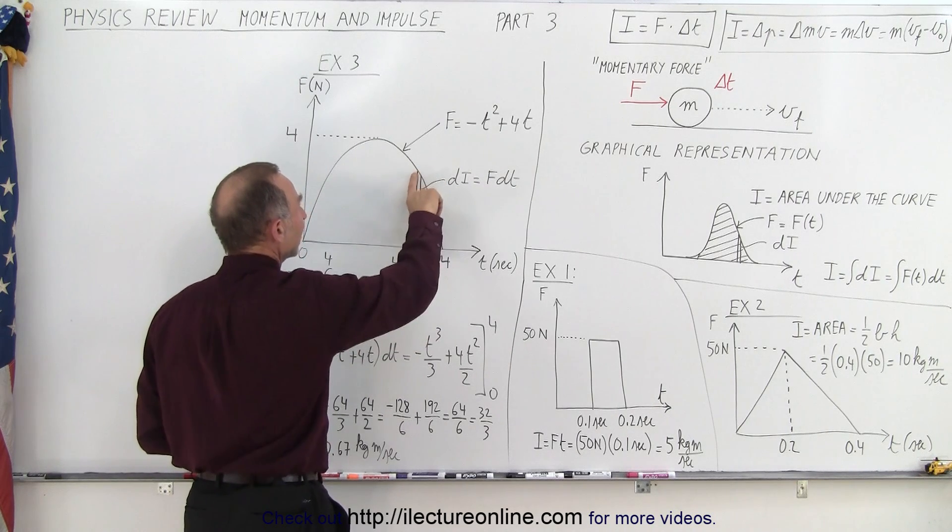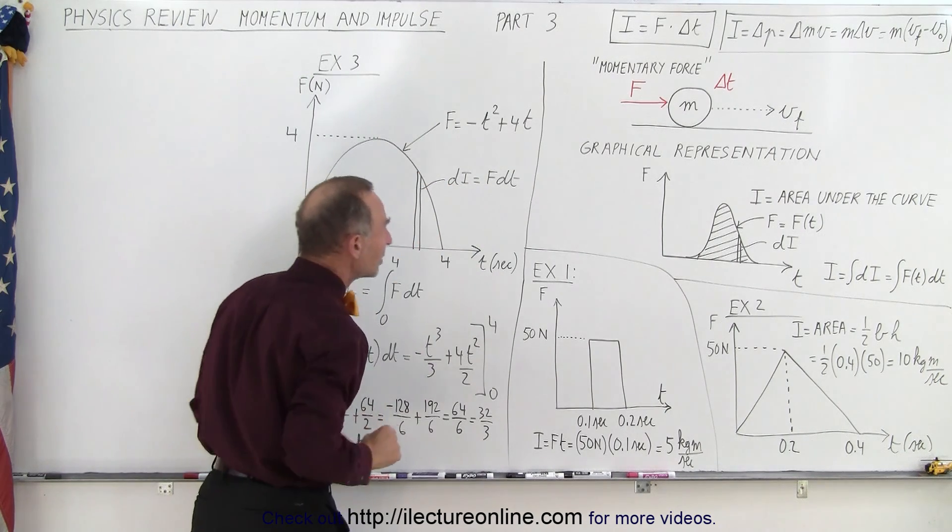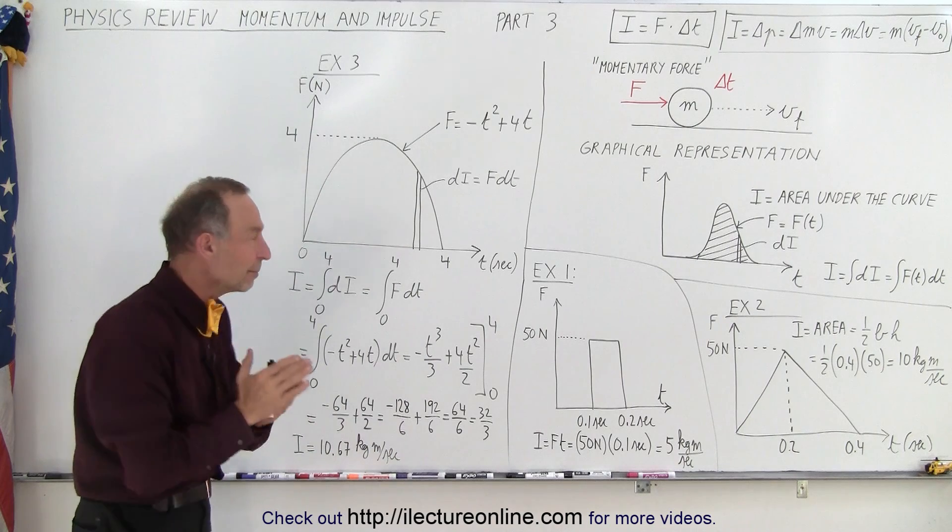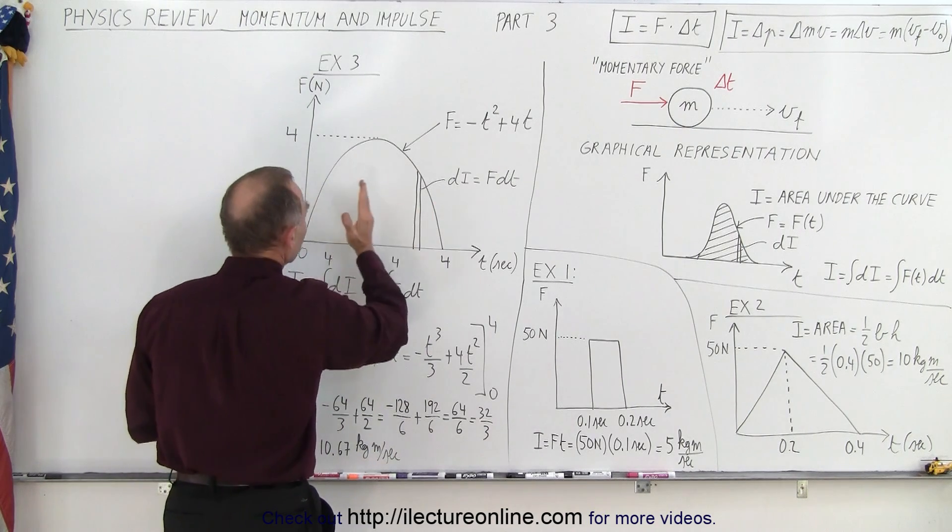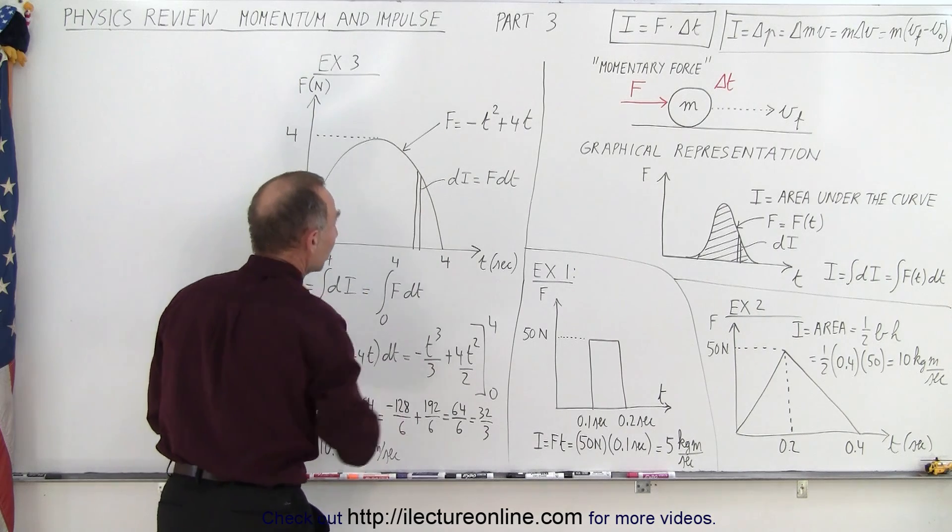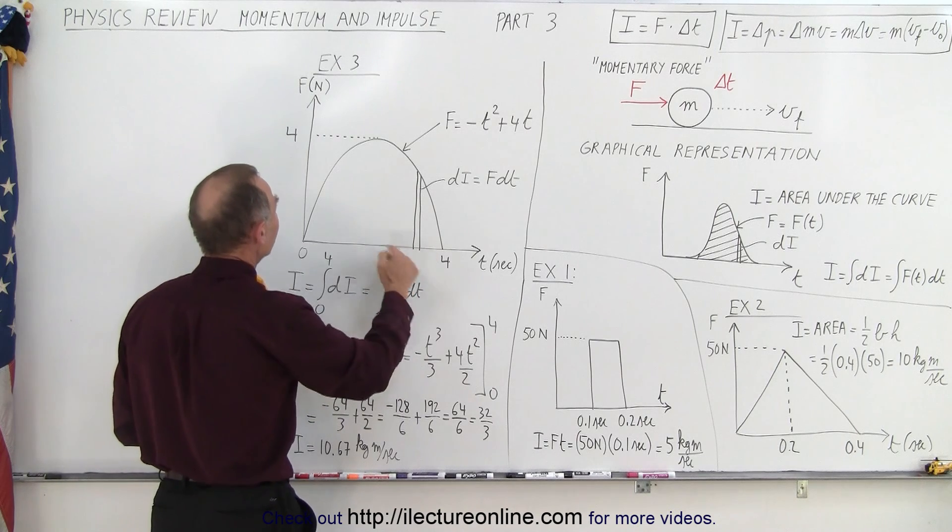The impulse would be the height, which is the force at that moment in time, times the width of that, which is a small dt. So that's your small amount of impulse, and what we're going to do now is sum all these up. We're going to snip it all up in little pieces. We're going to add them all up, which is essentially integration. Notice that the time goes from 0 to 4 seconds, and the force goes from 0 to 4 Newtons at its maximum.